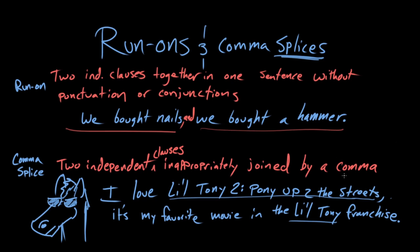We could say: I love Little Tony 2, Pony Up to the Streets, comma, and it's my favorite movie in the Little Tony franchise. Or, as we did in the previous example, we could also use a semicolon: I love Little Tony 2, Pony Up to the Streets; it's my favorite movie in the Little Tony franchise.